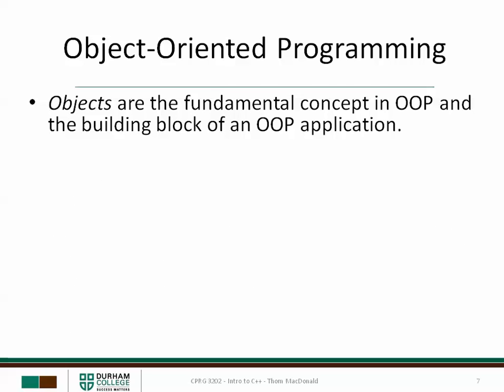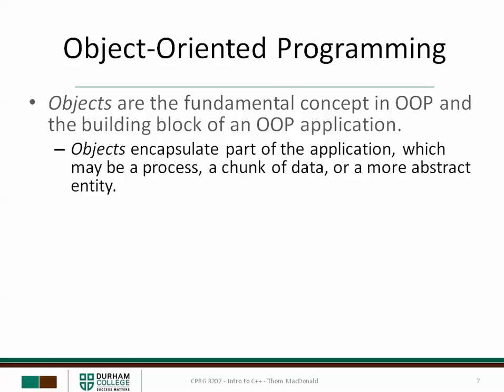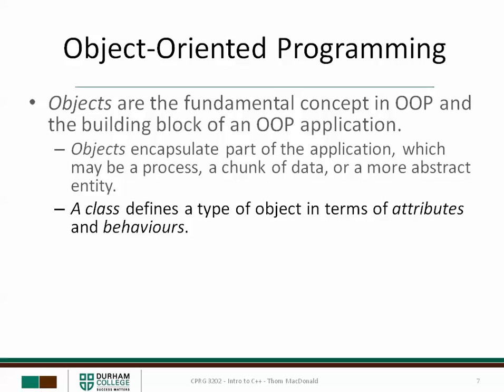The fundamental concept in object-oriented programming is objects. Objects represent the basic building block of an object-oriented programming application. An object encapsulates part of the application — they can be used to represent a process, a type of data, or something more abstract. For example, in our programs where we were manipulating files, we used file stream objects to represent the connection between our program and a file on a disk. A class is a definition for a type of object, and it specifies what attributes an object will have and what behaviors an object will have.